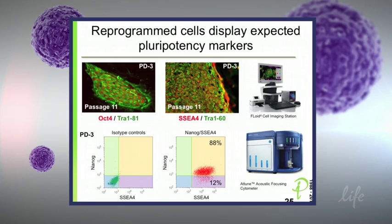We started to characterize the lines. We looked at the pluripotency markers and saw all the expected pluripotency markers by immunocytochemistry and also flow: OCT4, TRA-1-81, TRA-1-60, SSEA4 as surface markers, and also NANOG expression using ICC and flow.